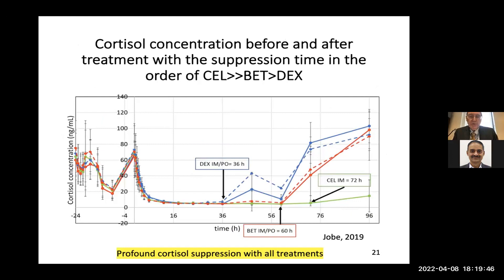When you give maternal cortisol or any combination of steroid, the initial part of the curve shows the normal circadian rhythm in non-pregnant women. When a 6 mg dose is given, adrenal function is profoundly suppressed. With celestone treatment, adrenal function is completely suppressed for almost 70 hours and still suppressed at 96 hours. The take-home message is that with standard dosing, when the woman is on the labor ward, she is adrenal suppressed — which may not be good given the stress of preterm labor.